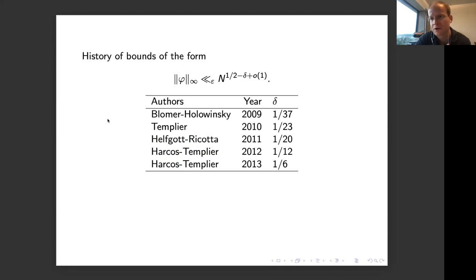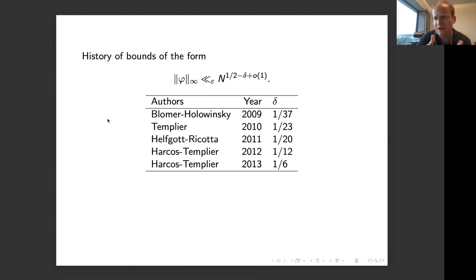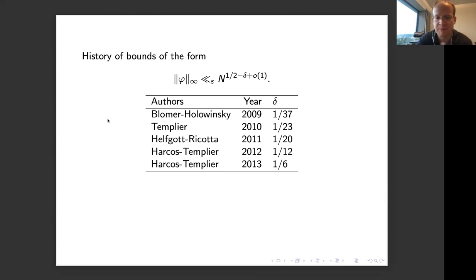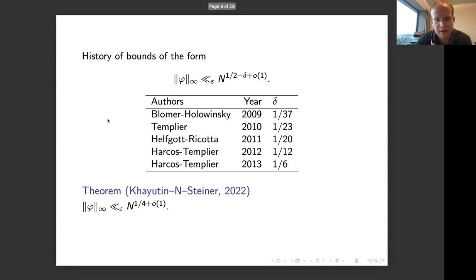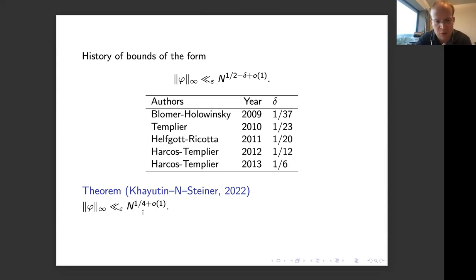Steiner, Khayutin, and I tried looking at this question using the fourth moment approach. We didn't know whether it would succeed — it works well in the weight aspect, fails in the spectral aspect, and the level aspect for square-free levels is intermediary between those two. For about six months it seemed it would definitely fail. Then we ended up actually making it work. What we get is a further improvement from one-sixth up to one-quarter, exactly halfway between the trivial bound and the optimistic bound. We were quite surprised. It's a preprint — you can tell us if you believe it worked out.